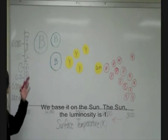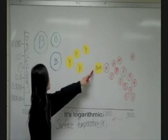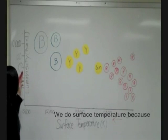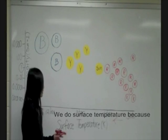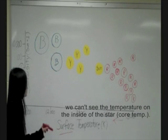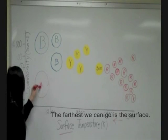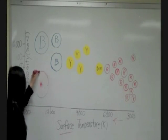So on the y-axis we have the luminosity in relation to the sun. The sun's luminosity is 1. We do surface temperature because we can't see what the temperature is like inside the star. So the farthest we can go is the surface.